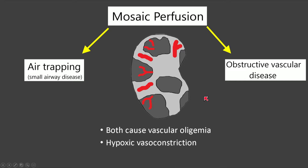Air trapping causes vascular oligemia through hypoxic vasoconstriction. Areas that are air trapped are not being correctly aerated, so the body shunts blood away; the vessels in that area become smaller and less numerous, the lung is underperfused, and appears hyperlucent on CT. Obstructive vascular disease results from direct vascular obstruction — because the vessels are obstructed, that area is underperfused, vessels appear smaller, and the lung appears more lucent.